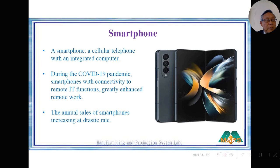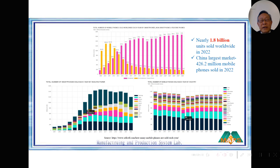Smartphones are cell phones with an integrated small computer. Especially during COVID-19, we proved that smartphones are indispensable — we don't know how to live, how to work without a smartphone. Annual production is now 1.8 billion per year last year, and it's still increasing because there are many potential markets growing.